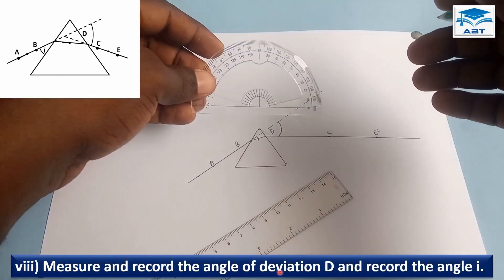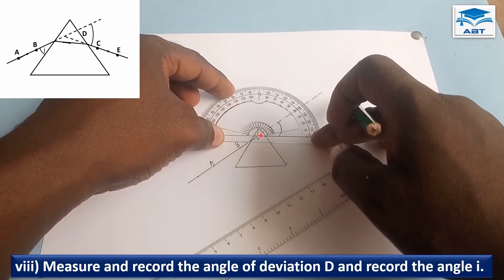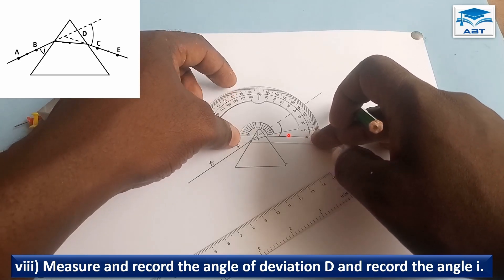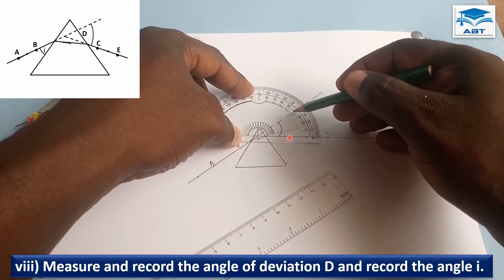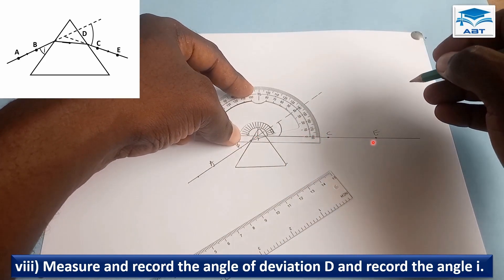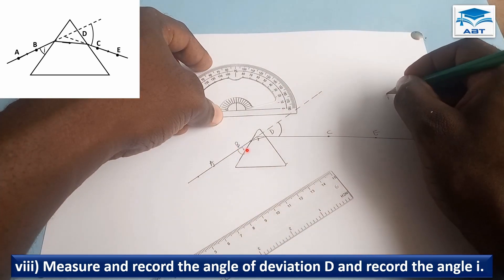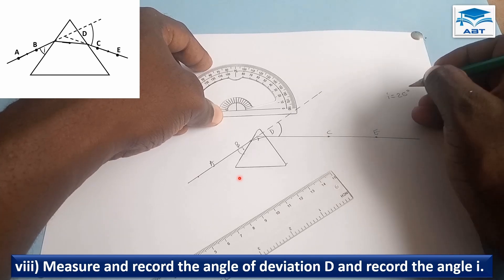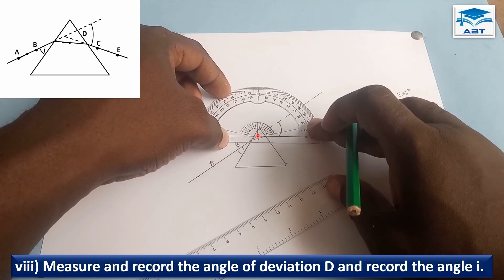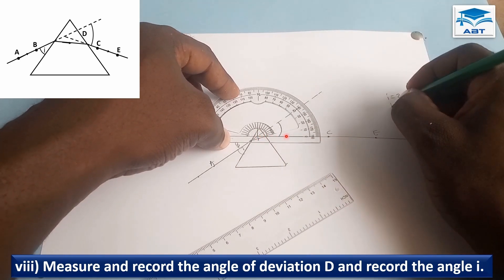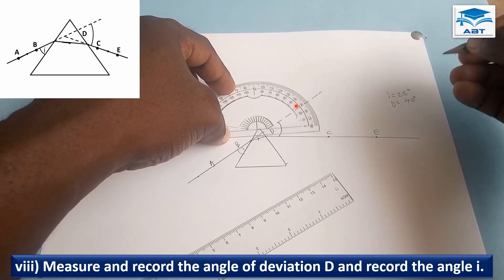Measure and record the angle of deviation D. So we put the protractor on the diagram such that this point falls on the intersection and this line falls on line EC. We want this point to fall on the intersection of the two lines, and this line on EC will measure from this direction and we have 40 degrees.